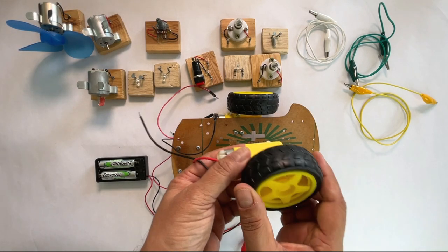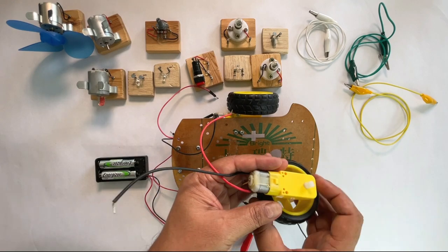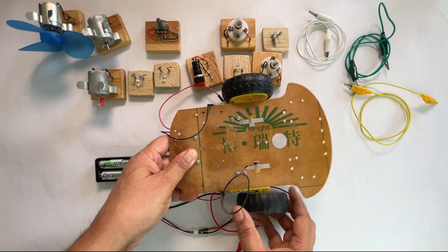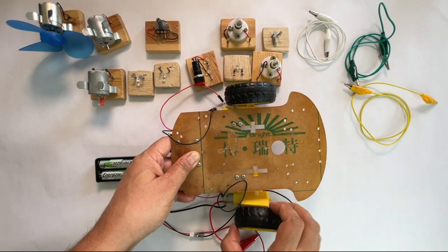Here we have a DC motor with a wheel. Imagine that this motor is attached to our toy car. So we have two motors with wheels attached to our toy car.